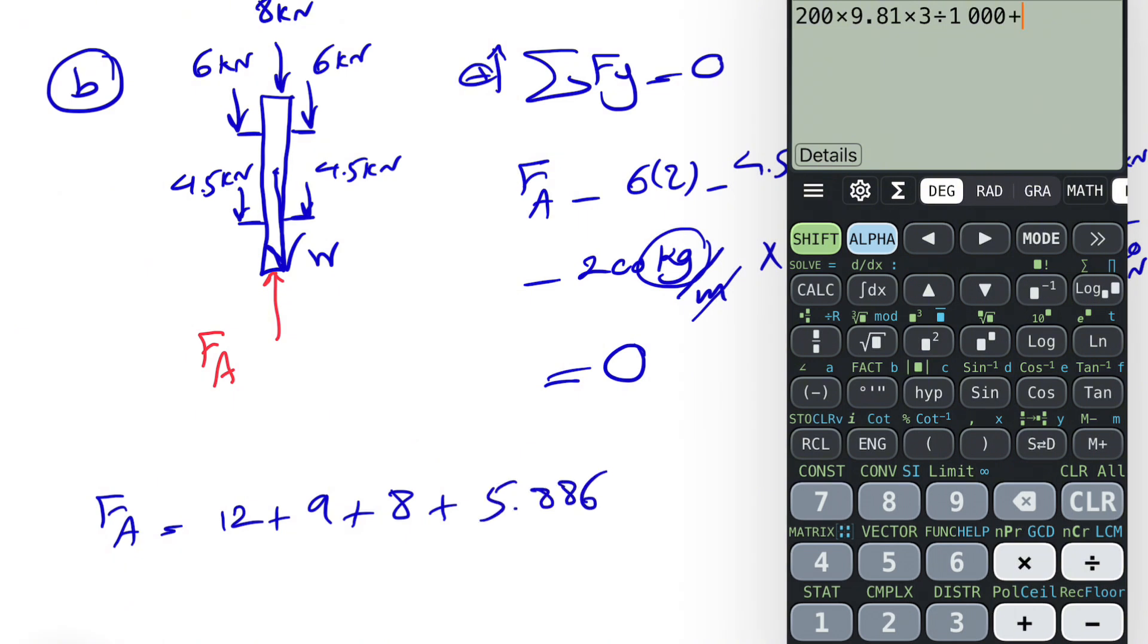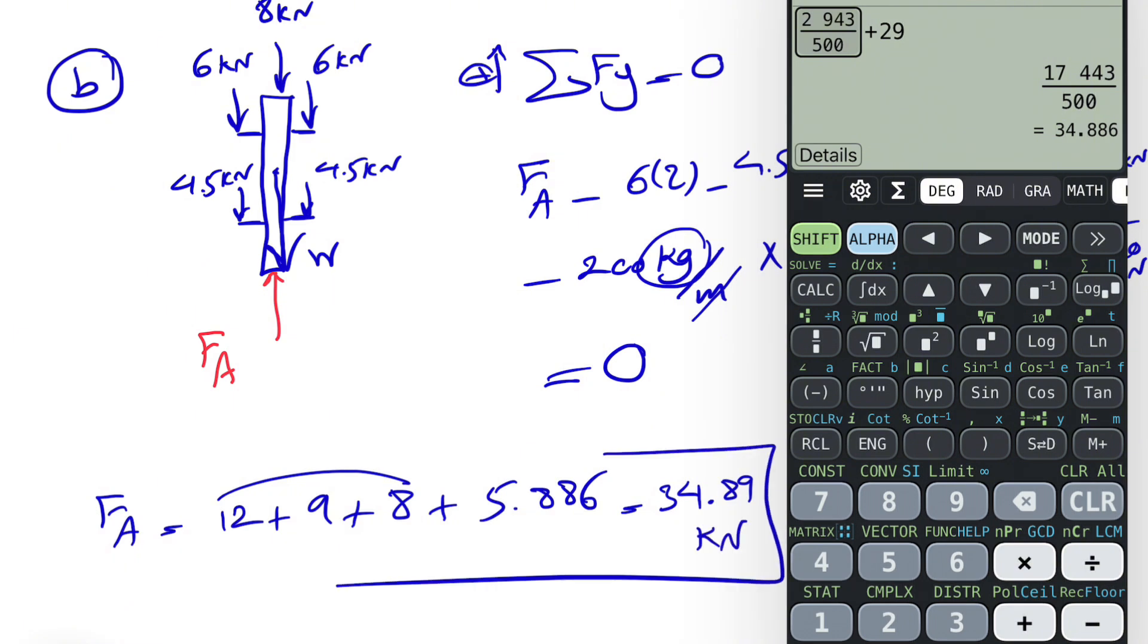And all we need to do is just add. We're going to add that plus this will equal 29. So the final answer for this would be 34.89 kilonewtons, which would be the final answer for this question.